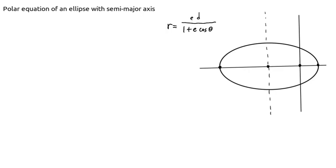So for this example, we are given the polar equation of an ellipse whose directrix is x equals d. So that directrix would be over here outside of the ellipse somewhere. And we are also told that the semi-major axis of this ellipse is a.